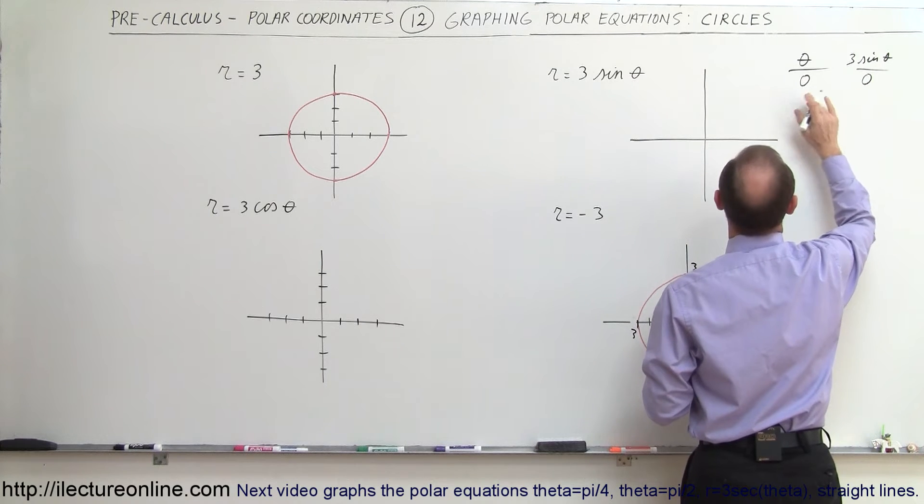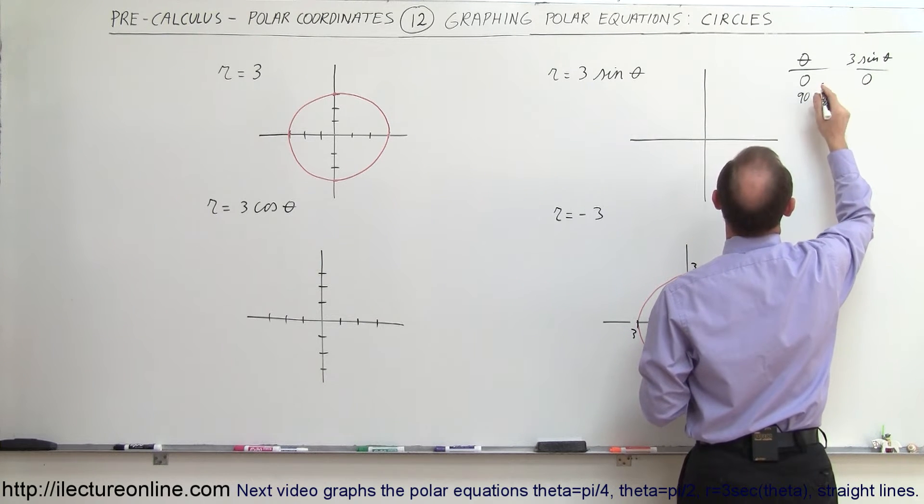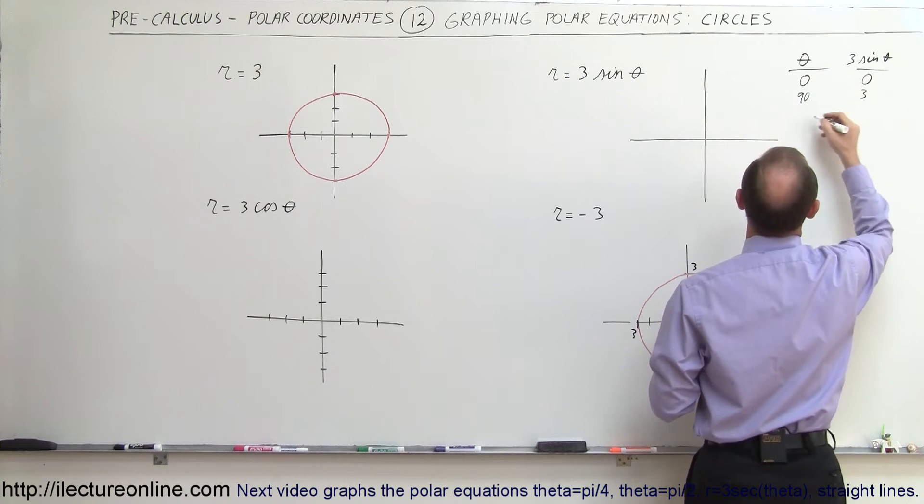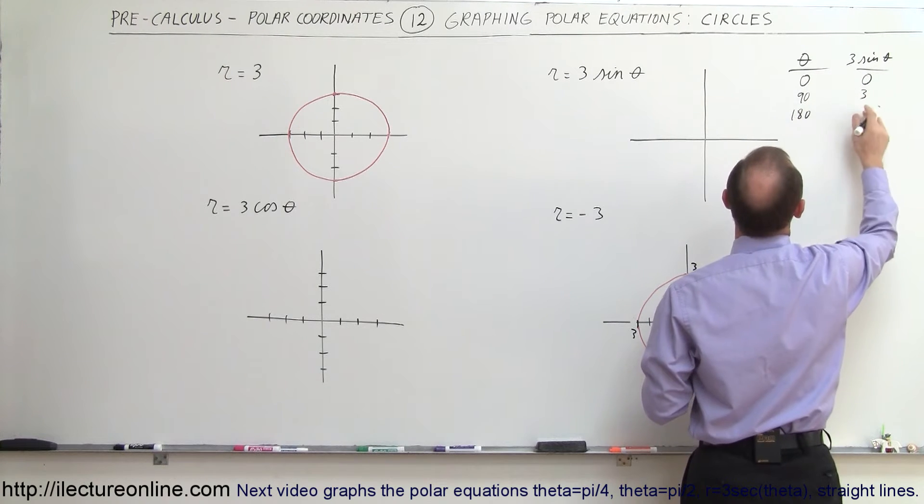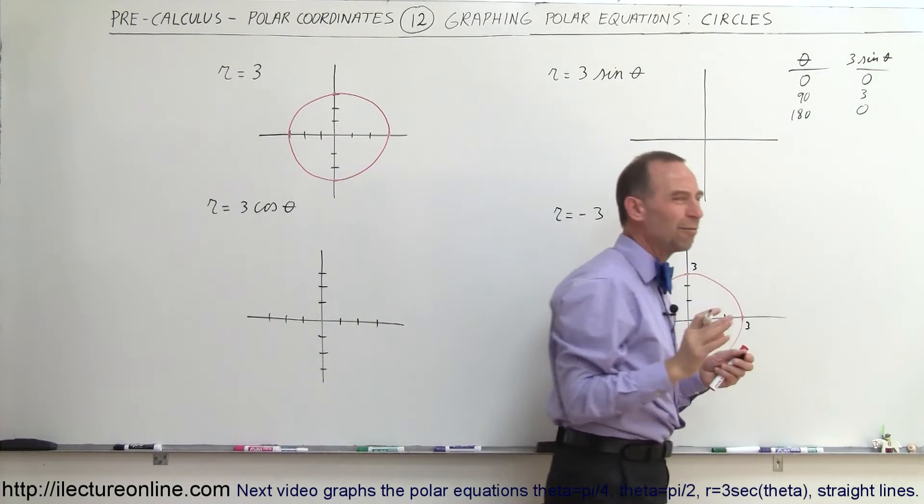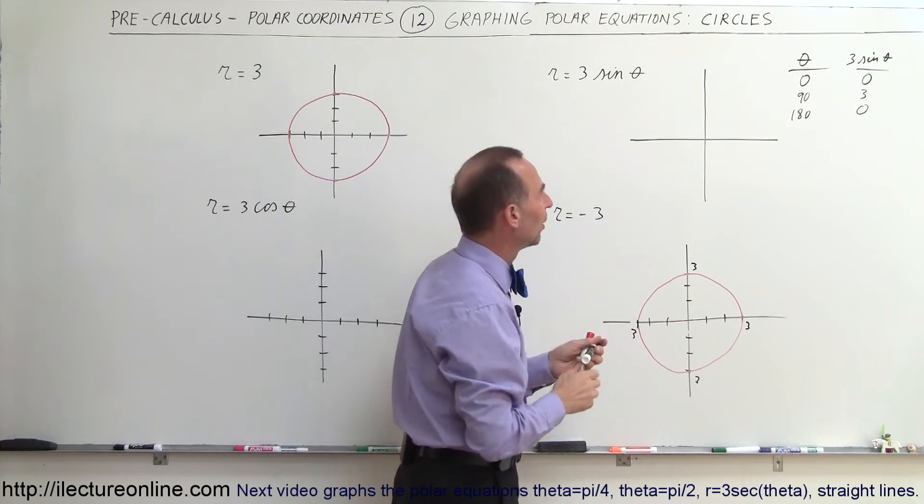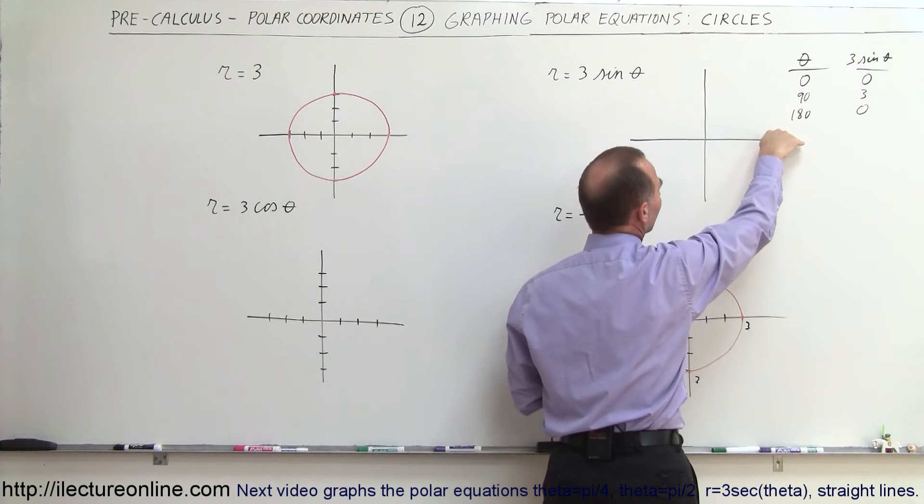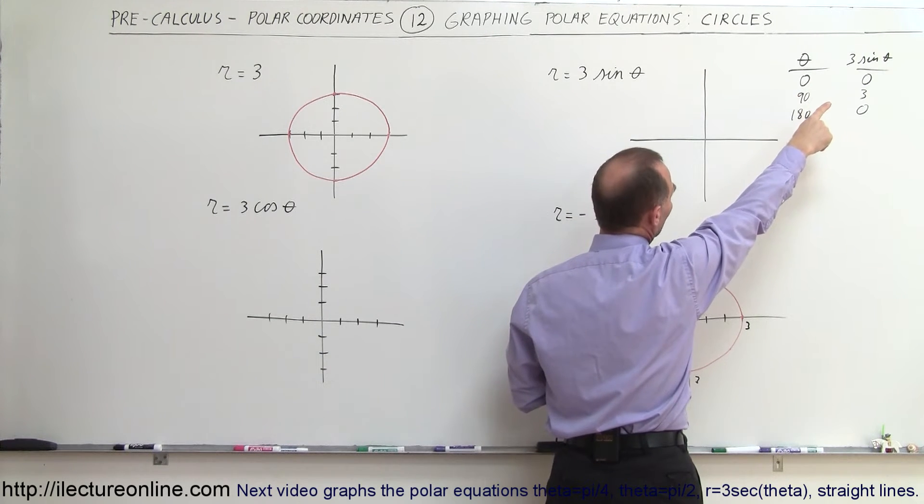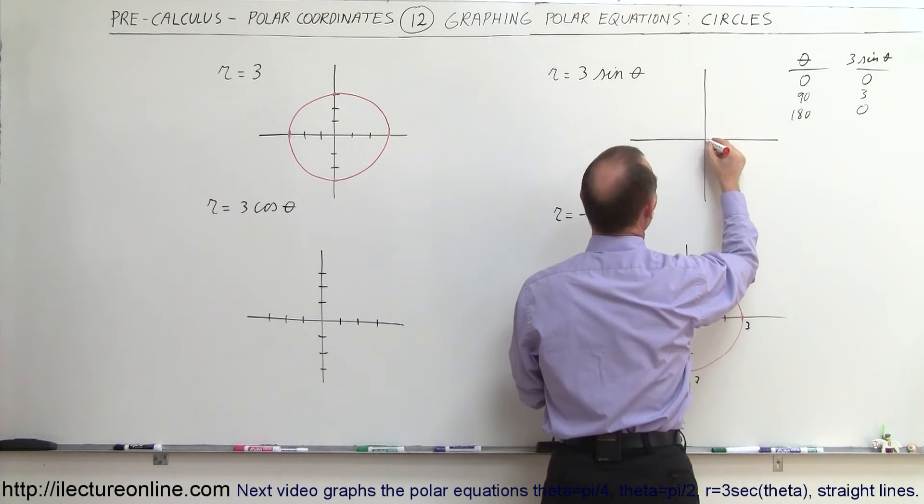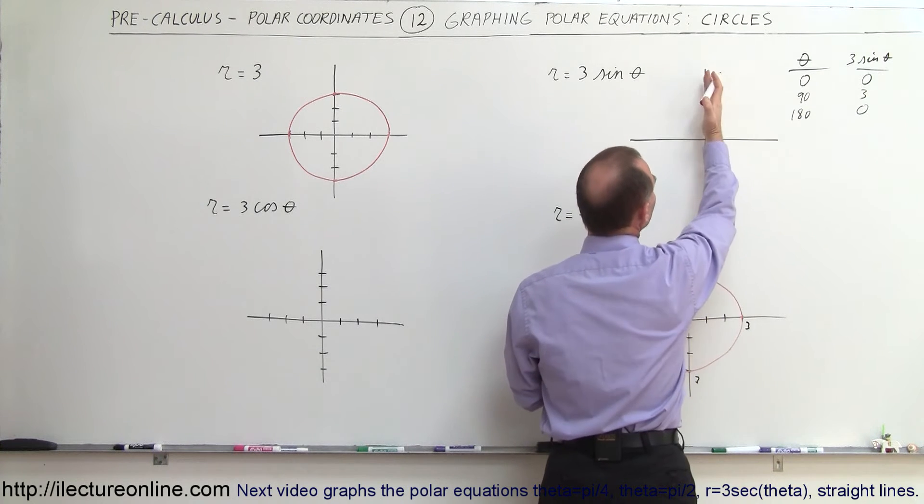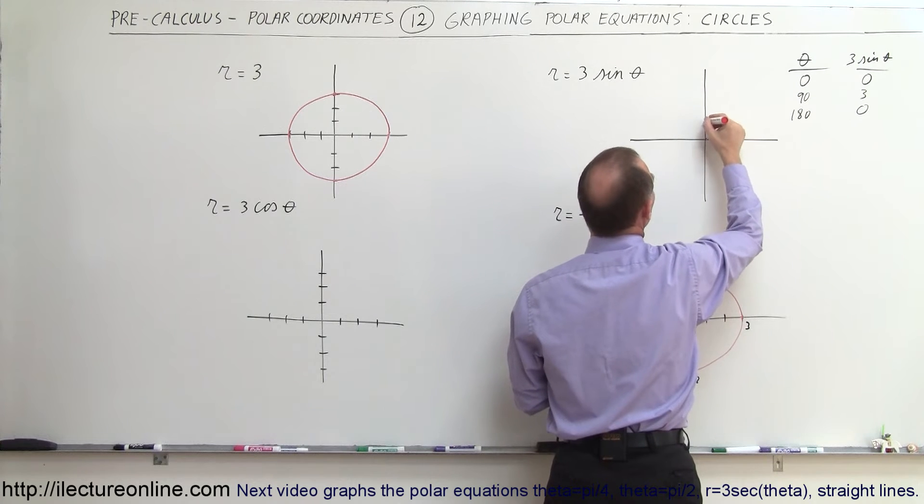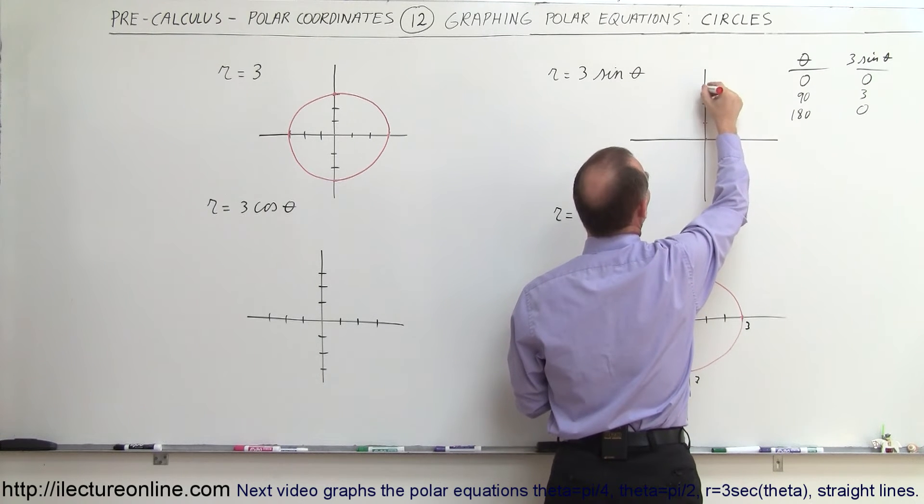And if theta is equal to 90 degrees, the sine of 90 is 1, and 3 times 1 would be 3. And if we go 180 degrees, we're back to 0. So let's try those three values and see if we can make sense out of that. If we're pointing in the 0 direction, theta equals 0, that was along the positive x-axis, we have 0, so that gives us this value right here. Then if we're pointing in the 90 degree angle, 3 times sine of theta would be 3. 1, 2, 3, so we get this point right there.